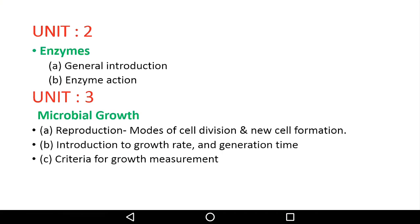Unit 3 covers cell division and new cell formation, growth rate, and generation time. It also covers factors affecting growth, like pH and concentration.